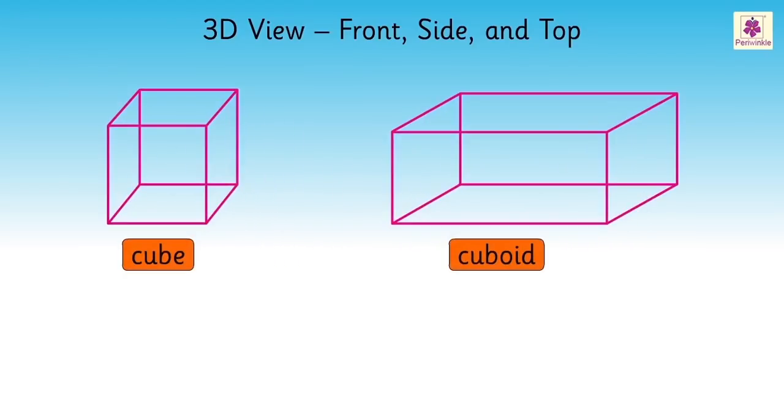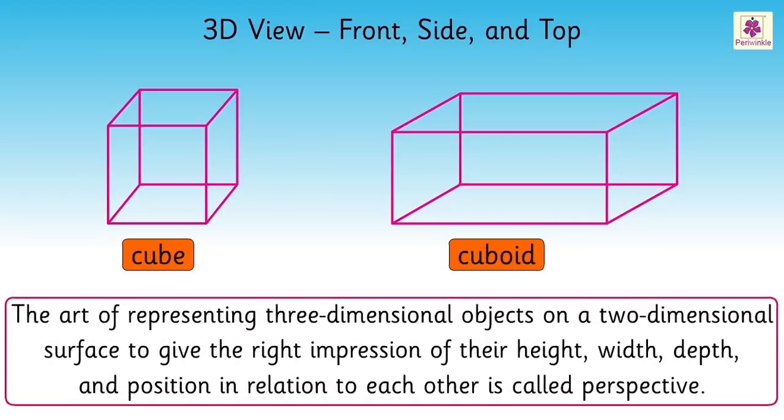Kids, we just saw how the three-dimensional shapes look when drawn on a paper which is two-dimensional. This art of representing three-dimensional objects on a two-dimensional surface to give the right impression of their height, width, depth and position in relation to each other is called perspective.